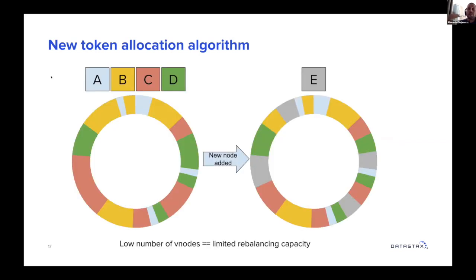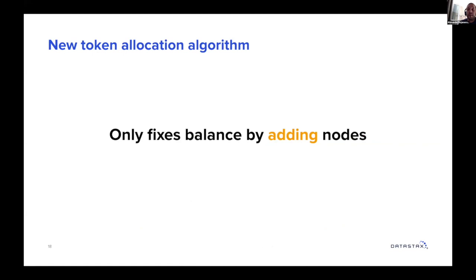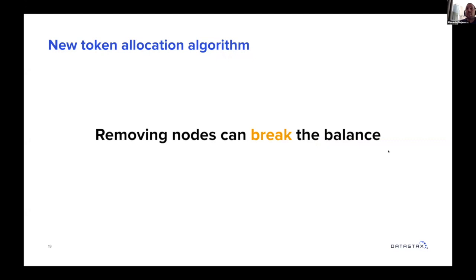If you use a very low number of vNodes — here's an example of a four-node cluster with four vNodes each — if you add node E, it can only split four existing token ranges, so you're still going to have some nodes owning more data than others. You can't go too low with your number of vNodes. It only fixes balance by adding nodes. If you remove some nodes, you might get back to an imbalanced cluster. Removing nodes can break the balance.